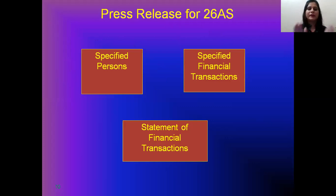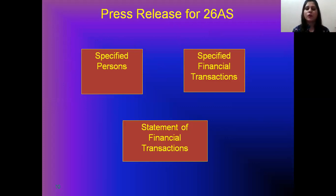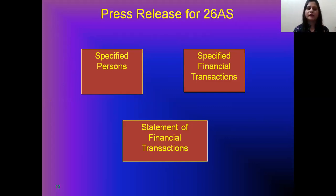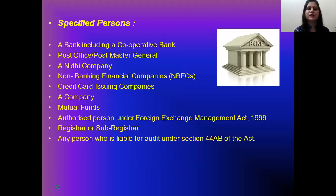Looking at the press release table for Form 26AS: specified persons will give details of certain specific financial transactions through a Statement of Financial Transactions. The specified persons include a bank including a cooperative bank, Post Office, Postmaster General, any company, NBFCs, credit card issuing companies, mutual funds, authorized persons under FEMA, registrar or sub-registrar, and any person liable for audit under Section 44AB of the Act. All these are specified persons.